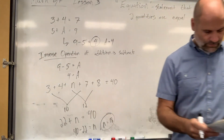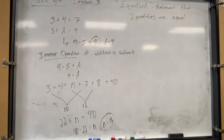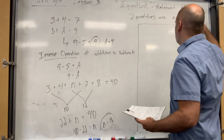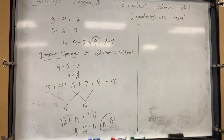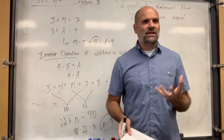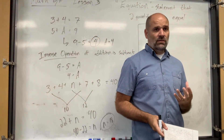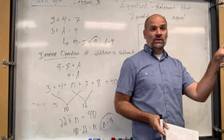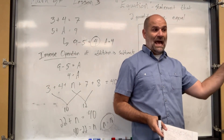Most of the time we can just go backwards and do the opposite operation. Why do I say most of the time? If you're missing something in an addition problem, you can always subtract the sum minus whatever you have left to figure out the missing addend.